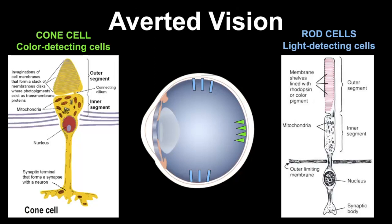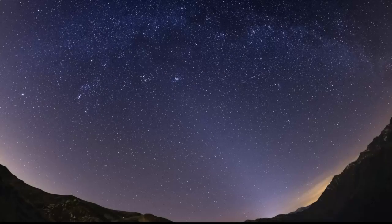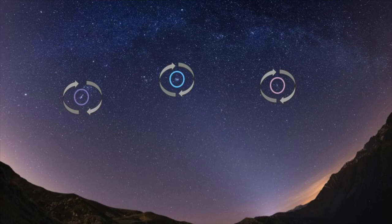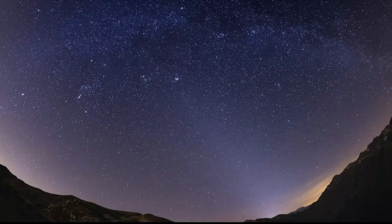Averted vision is something that takes time, practice, and patience, but you also need the right conditions. To use averted vision, astronomers deliberately look to the side of an object they want to observe. By doing this, the faint light from the object is hitting the more light-sensitive rods on the side of the retina.